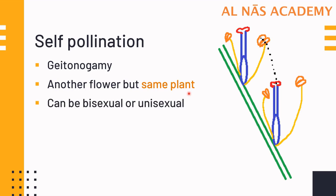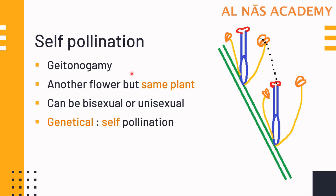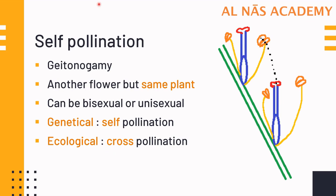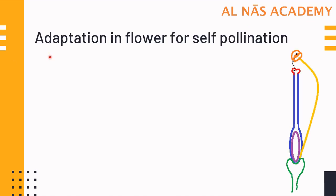When we say the flower is different, the flower can be bisexual or unisexual. Bisexual means both sex organs — androecium and gynoecium — are in the same flower. Unisexual means the male and female sex organs are in different flowers but on the same plant. From a genetical point of view, geitonogamy is self-pollination, but from an ecological point of view it comes under cross-pollination, as external agencies are required. Keeping in mind the genetic configuration, it always falls under self-pollination.